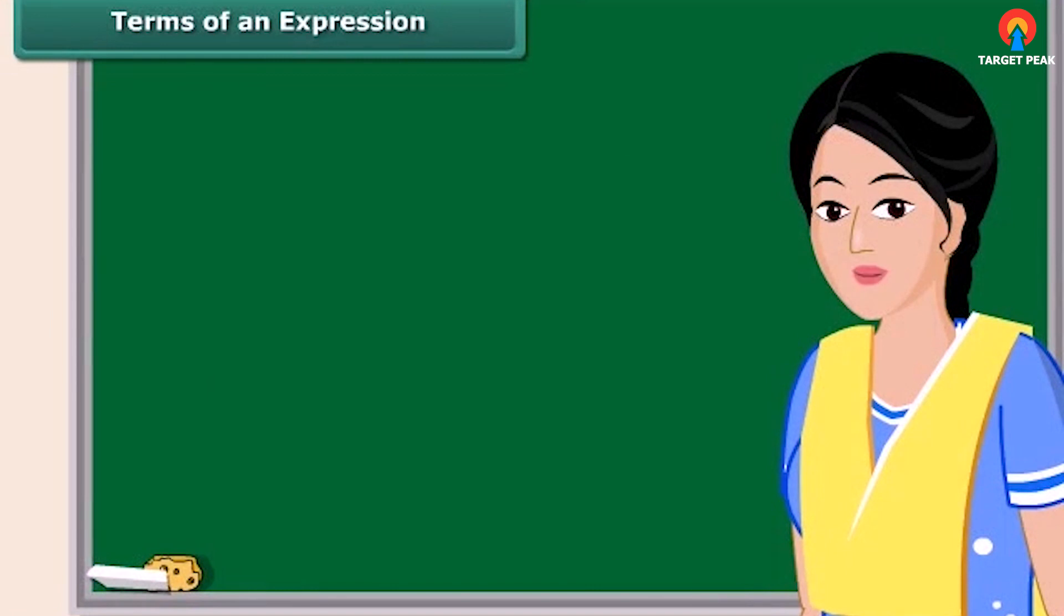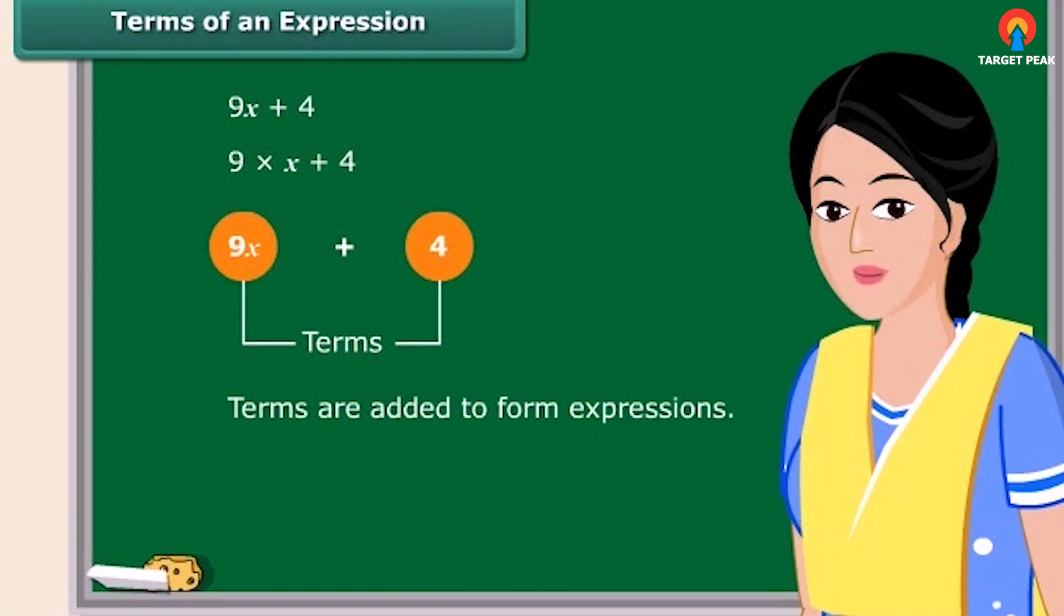Now, we will discuss what terms of an expression and their factors are. Consider the expression 9X plus 4. In forming this expression, we first formed 9X separately as a product of 9 and X and then added 4 to it. You have seen these expressions have parts which are formed separately and then added. We call these parts as terms. That means, terms are added to form expressions.